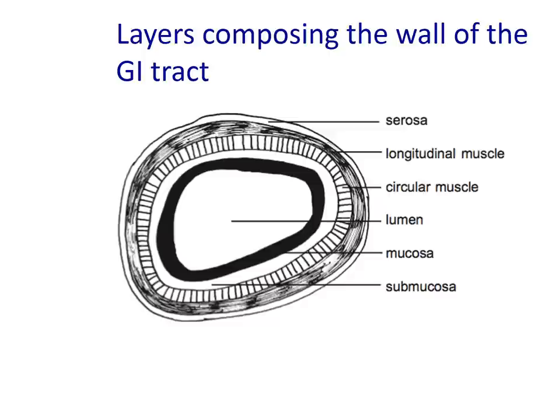In areas such as the mouth, esophagus, and anus, which are subject to a lot of mechanical forces and abrasion, the mucosa is composed of a stratified epithelium containing several layers of cells. In sections associated with absorption, it's important for the lining to be thin enough to facilitate diffusion of nutrients, so the mucosa is composed of a simple columnar epithelium — just one layer of cells thick — sitting on a basement membrane.